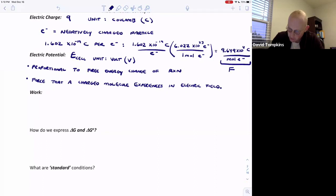So joules per coulombs and we'll see that that voltage or the potential relates to the free energy change with an equation in just a second.